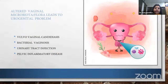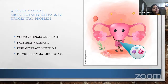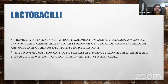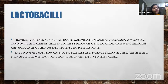Altered vaginal microbiota usually leads to urogenital problems including vulvovaginal candidiasis, bacterial vaginosis, urinary tract infection, and pelvic inflammatory disease, which may later lead to infertility, mainly through tubal factor. The main inhabitant maintaining vaginal pH is lactobacillus, which provides defense against pathogen colonization such as Trichomonas vaginalis, Candida species, and Gardnerella by producing lactic acid, hydrogen peroxide, and bacteriocins, and by modulating the nonspecific host immune response. These bacilli can survive under low gastric conditions and bile salts, pass through the intestine without harm, and ascend into the vagina.